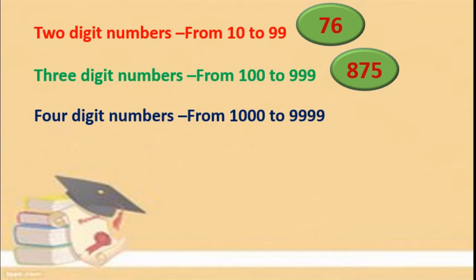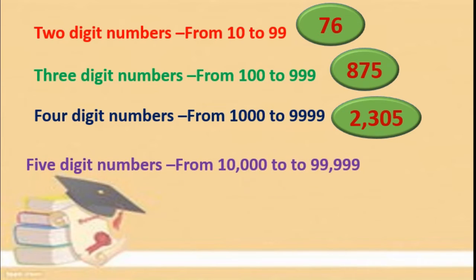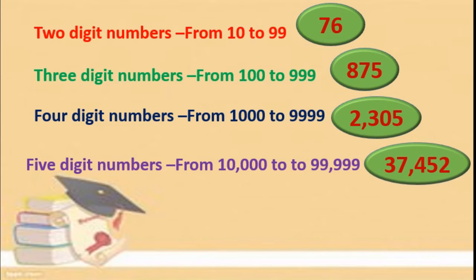Four-digit numbers are from 1,000 to 9,999. One example is 2,305. Five-digit numbers are from 10,000 to 99,999. One example is 37,452. Up to this, you know how to write and how to read the numbers.